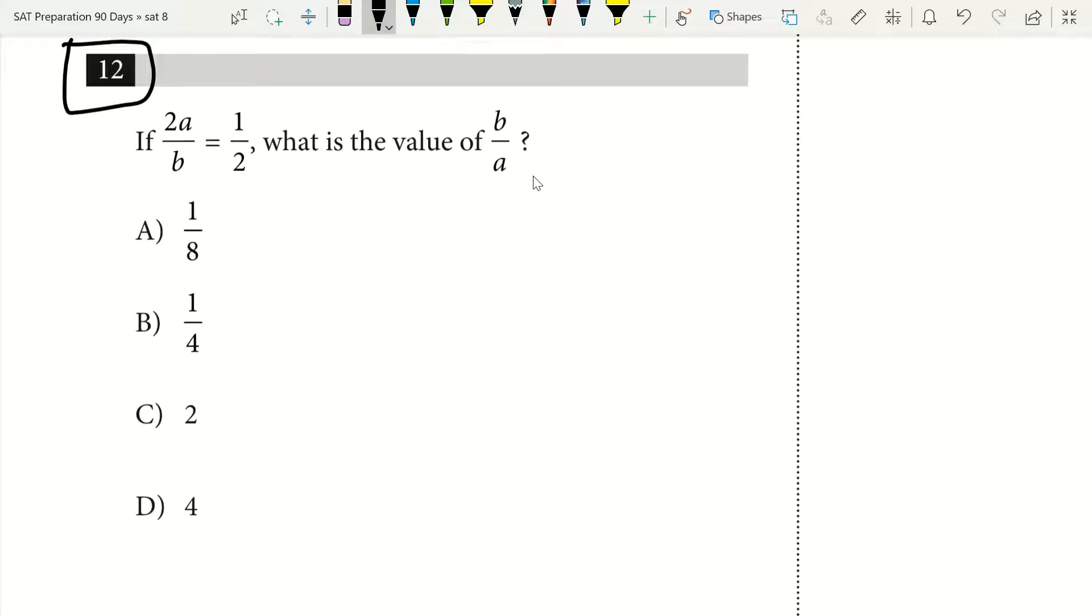If I read this question, I see if 2a over b equals 1 half, what's the value of b over a? Well, in this case, what I actually find is that inputting variables is going to help me find this pretty quick.